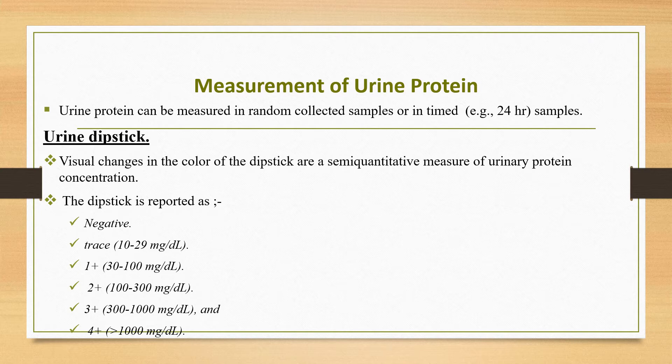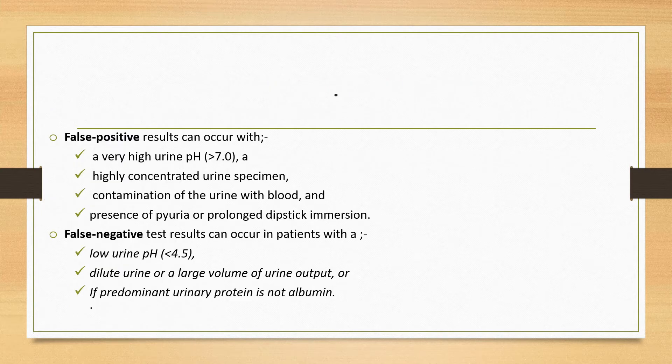False positive results can occur with a very high urine pH (greater than 7), a highly concentrated urine specimen, contamination of the urine with blood, the presence of pyuria, or prolonged dipstick immersion. False negative results can occur in patients with low urine pH, dilute urine, large volume urine output, or when the predominant urine protein is not albumin. The dipstick result varies with urinary pH and whether urine is concentrated or dilute.